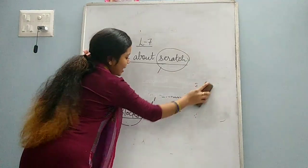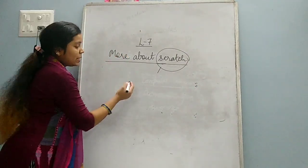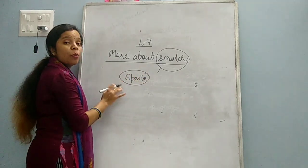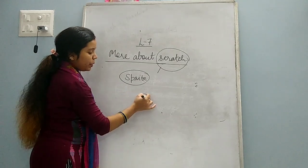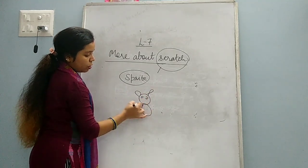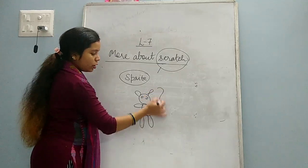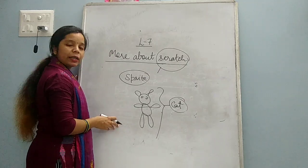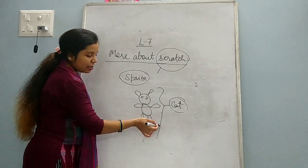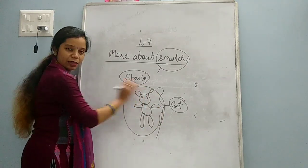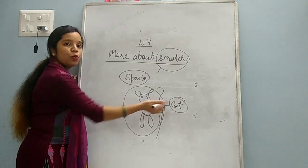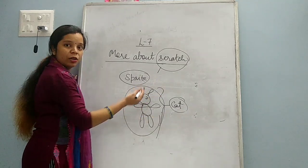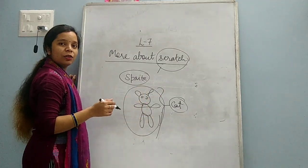What happens in scratch? In scratch, you will see one sprite. This is the main component of scratch. This sprite is simply a cat in scratch. What we do in scratch? We give instruction to this cat. Like we will give instruction for moving, so this cat will move. If we will give instruction for rotation, so this cat will rotate.